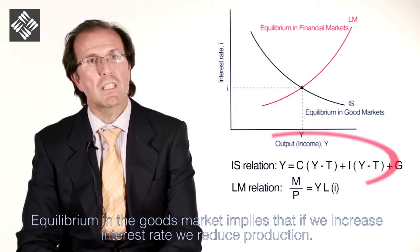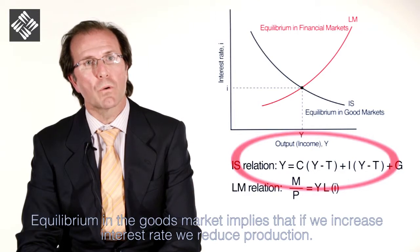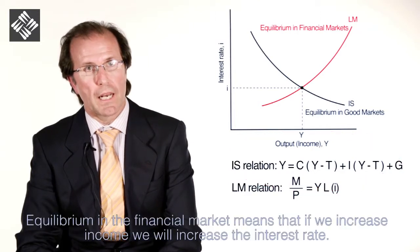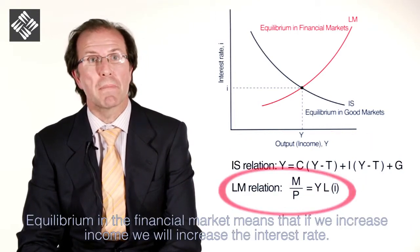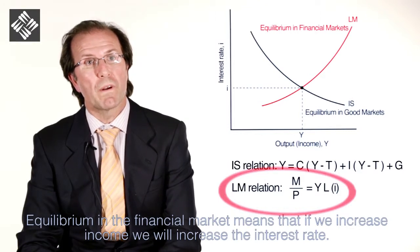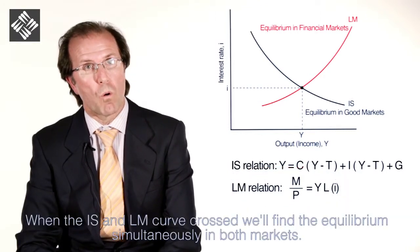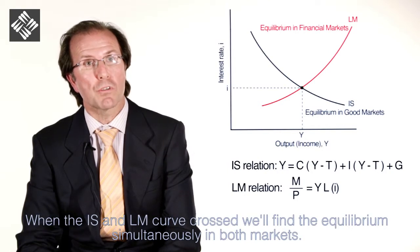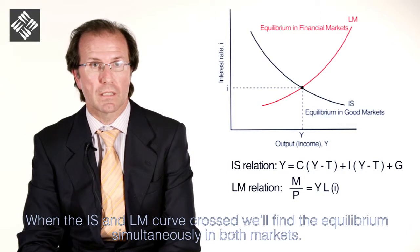Equilibrium in the goods market implies that if we increase the interest rate, we reduce production. Equilibrium in the financial market means that if we increase income, we will increase the interest rate. When the IS and LM curves cross, we will find the equilibrium simultaneously in both markets.